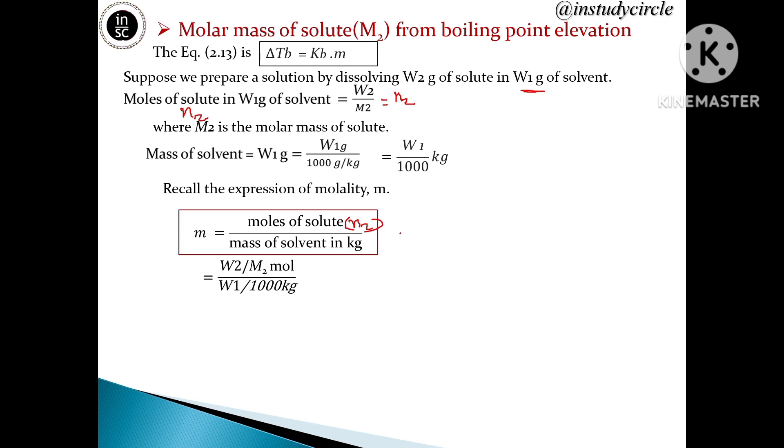Now substituting the values: n₂ = W₂/M₂ and mass of the solvent W₁ = W₁/1000 kg. So we get m = n₂ divided by W₁/1000.